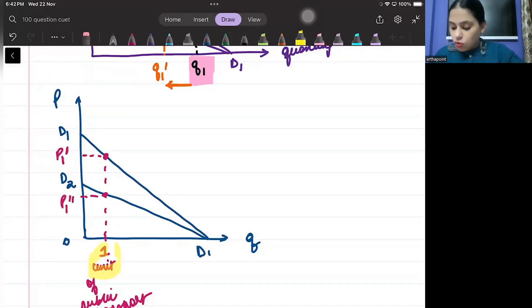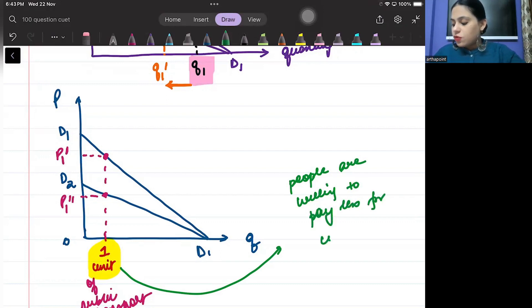So, for the same quantity, their willingness to pay has fallen. They are willing to pay less for that first unit. This is another interpretation that people are willing to pay less for this good.